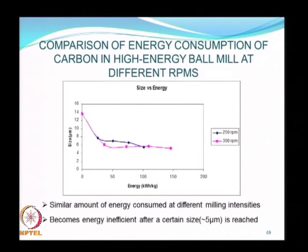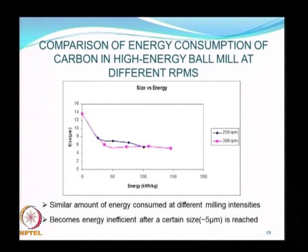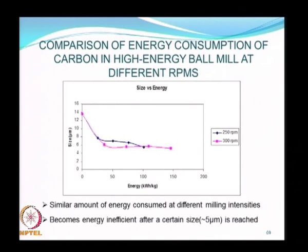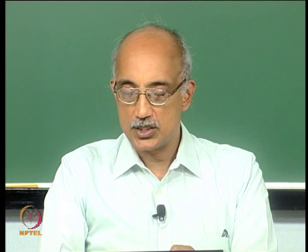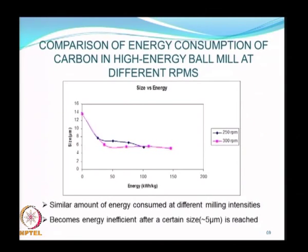A comparison of size versus energy input shows that a similar amount of energy is consumed at various milling intensities. Even if you change the RPM, as long as the input energy remains the same, the final size achieved also remains the same. The process of size reduction by ball milling becomes energy inefficient after about 5 microns is reached—you can keep increasing energy input without changing the mean size after roughly 50 kilowatt hours per kilogram.